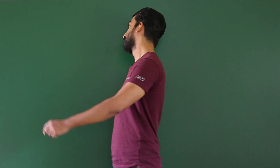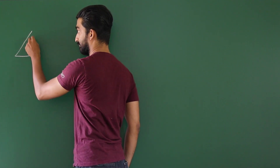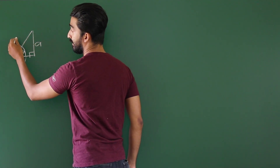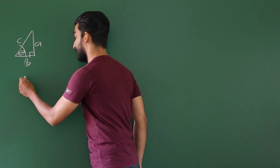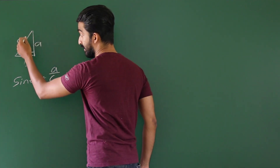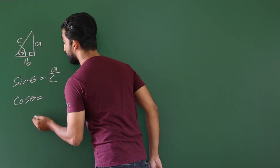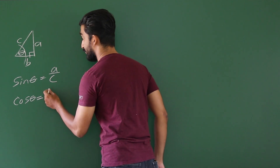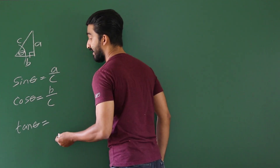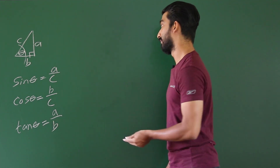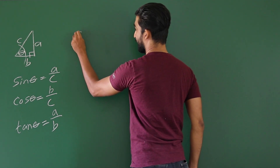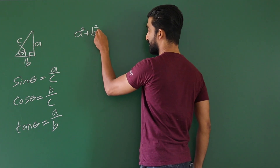You already know, when you consider a right angle triangle and this angle is theta — if this side is a, this side is b, and the hypotenuse is c — sin theta is the opposite side over hypotenuse, which is a over c, and cos theta is the adjacent side over hypotenuse, which is b over c. Now if you write Pythagoras theorem for this right angle triangle, it is a² + b² = c².